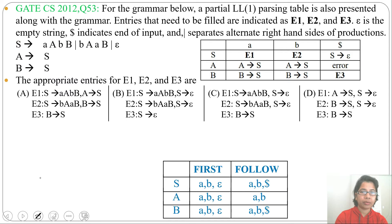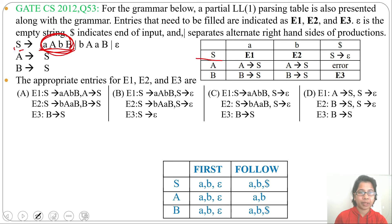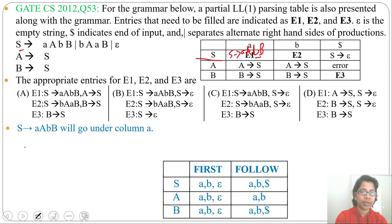Let's do the parse table row by row, starting with the S row. There are three productions for S. Since FIRST of the production S → AABB starts with A, we write S → AABB in the A column, which is E1. Since FIRST of S → BAAB starts with B, we write S → BAAB in the B column, which is E2.